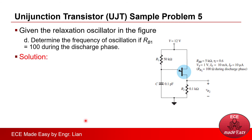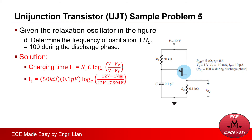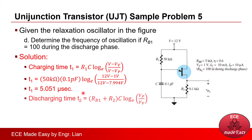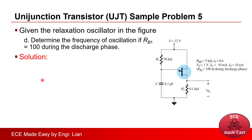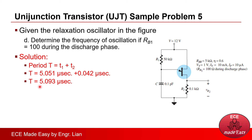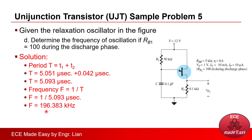Substituting all given values into the charging time formula gives a charging time of 5.051 microseconds. For the discharging time, substituting values gives 0.042 microseconds — significantly smaller and almost negligible compared to charging. The total period T is 5.051 plus 0.042 equal to 5.093 microseconds. The frequency, as the reciprocal of the period, equals 196.383 kilohertz. That is the final answer for Part D.